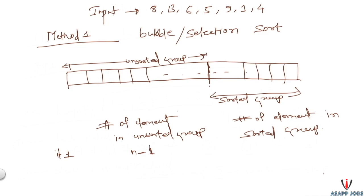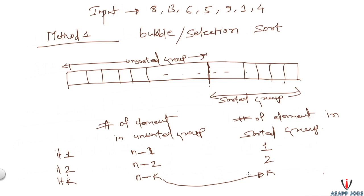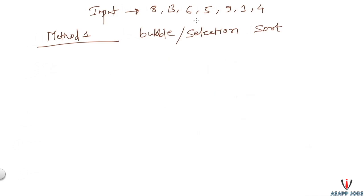After each iteration, the size of the sorted group increases by one and the size of the unsorted group decreases by one. If input size is n, then after iteration one we will have n minus 1 elements in the unsorted group and 1 element in the sorted group — that element will be the maximum. After the second iteration, the unsorted group will be n minus 2 and the sorted group will hold the two largest elements. If we iterate k times, we will have k elements in the sorted group and can return the element most recently transferred.